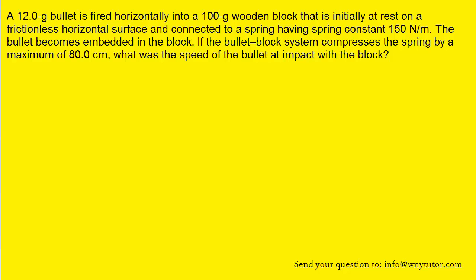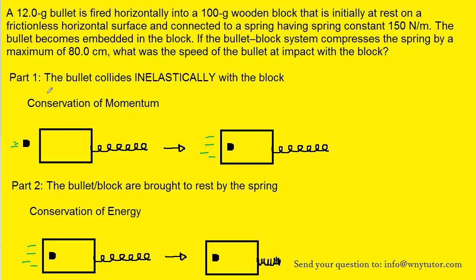It turns out that this question can be conveniently broken down into two parts. So in part one, we have the bullet colliding and becoming embedded in the block. And because of that situation, we have what is known as an inelastic collision, when the two objects that are colliding stick together.